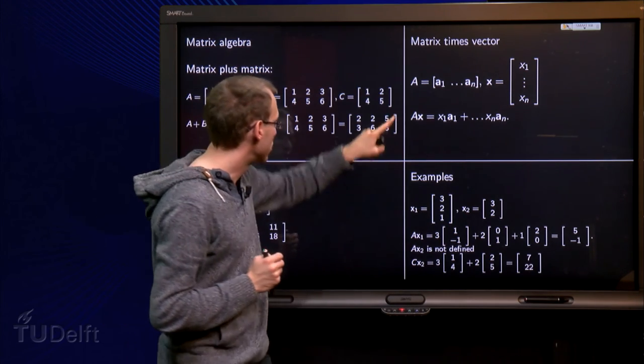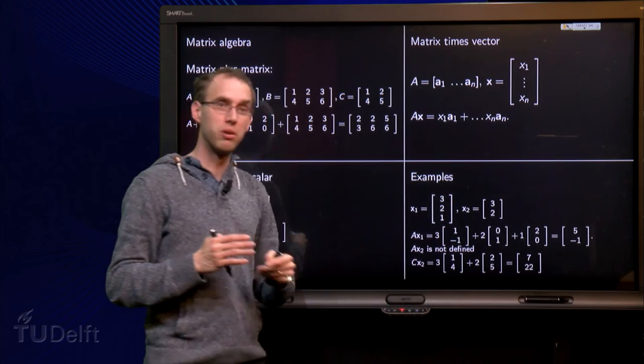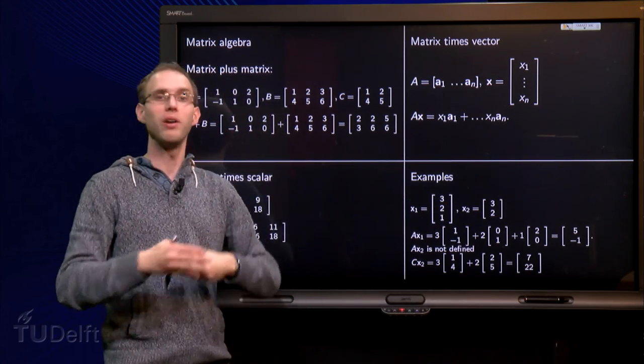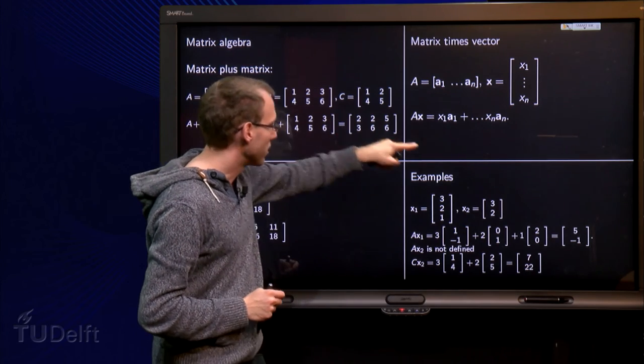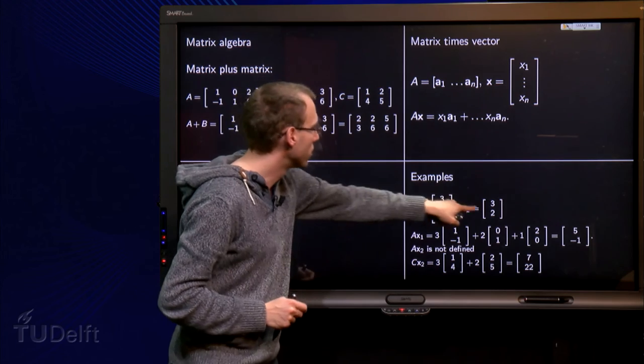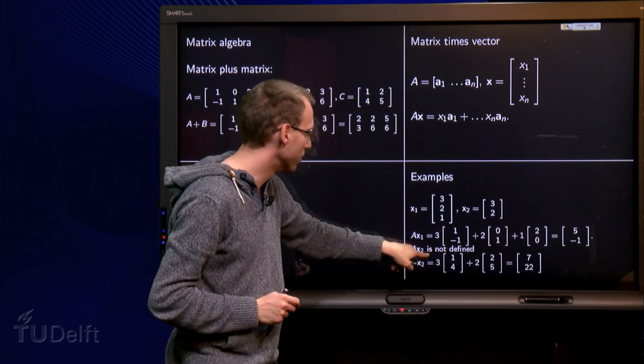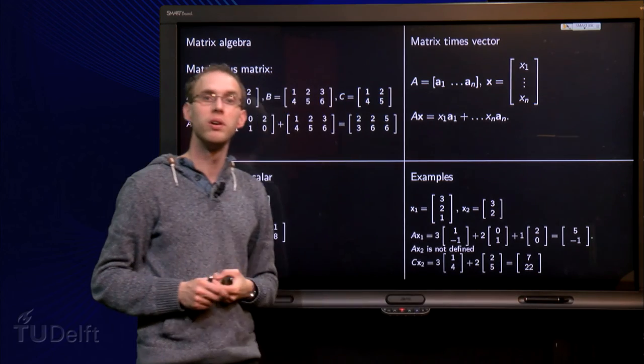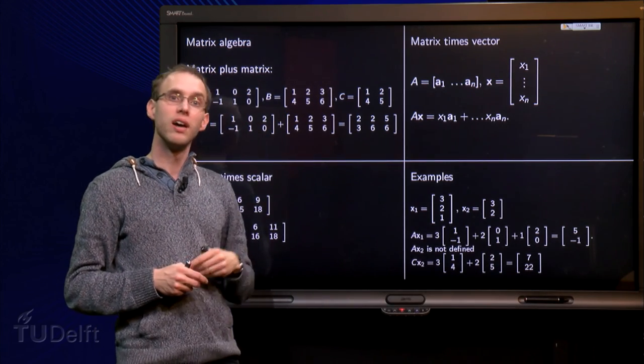Of course, we can compute C times X2, because C has only 2 columns, and X2 has 2 components. Well, let's do it. C times X2, 3 times 1, 4 over here, plus 2 times 2, 5 over there, yields 3 plus 4 equals 7, and 12 plus 10 equals 22. So that's how you compute C times X2.